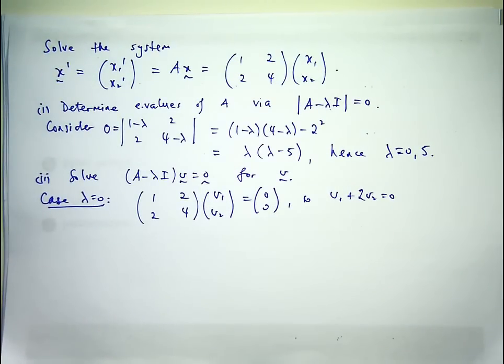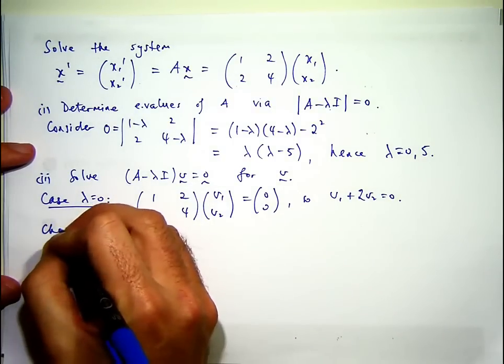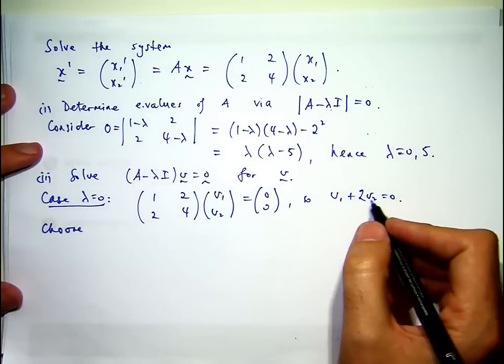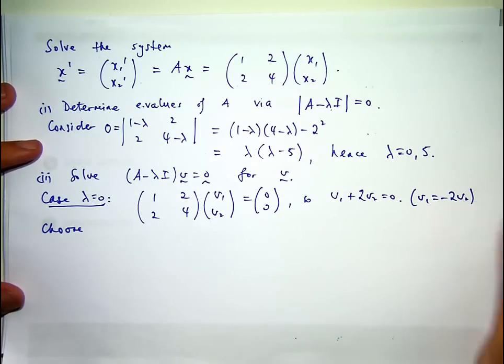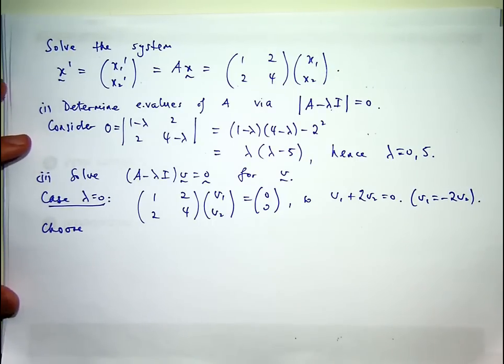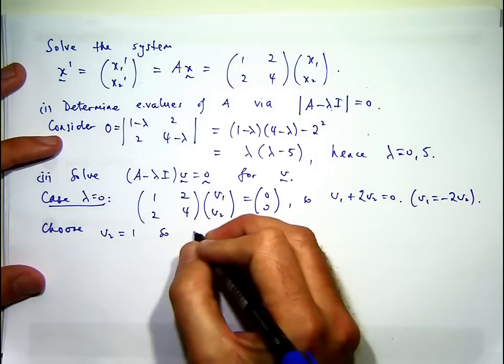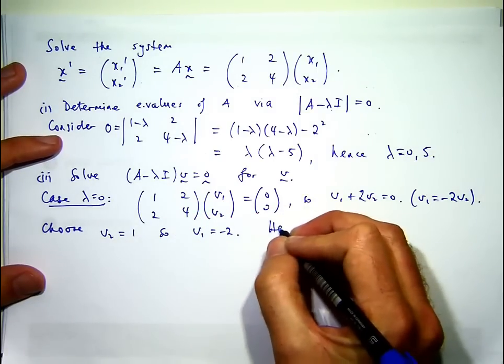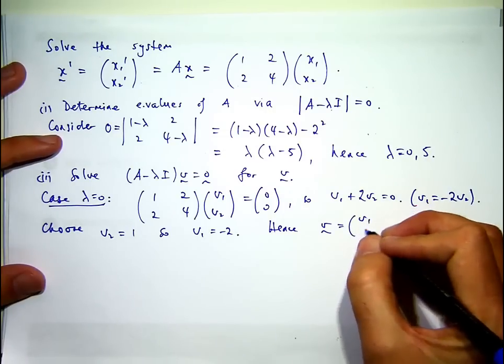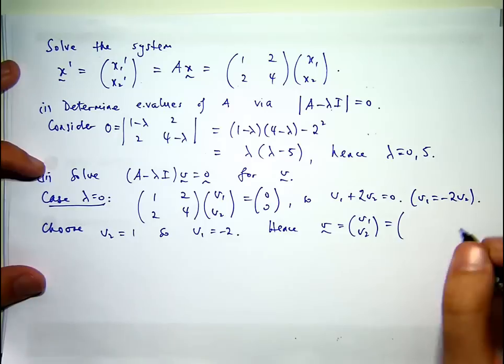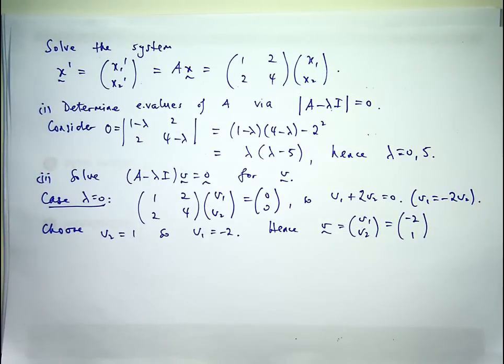Now we notice that lots of V1s and V2s will satisfy that. So let's just choose a simple value for one of them and we can get a value for the other one. Here I've chosen V1 equals negative 2V2. Essentially I've chosen V2 to be one, so V1 will be negative two. So an eigenvector corresponding to the eigenvalue lambda equals zero will be something like this. And of course you can have any multiple of that eigenvector.